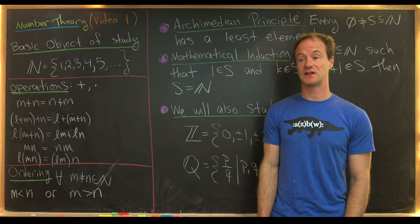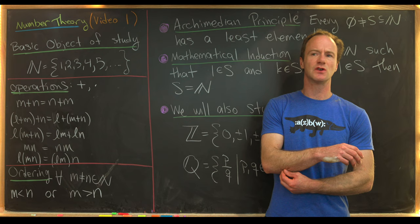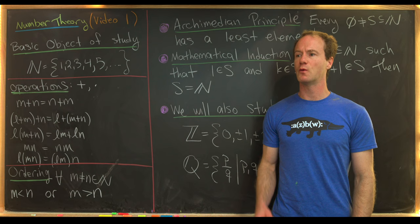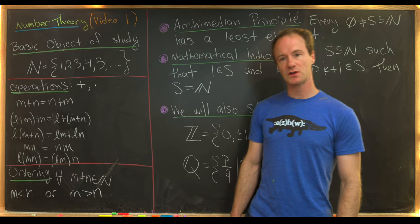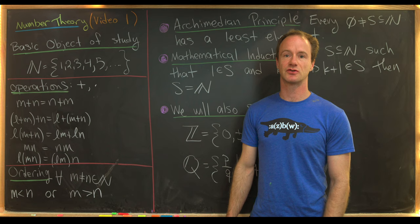I want to start off with our most basic object of study in this course, and that would be the natural numbers. We will not completely construct these natural numbers in a set theoretic way, but we will prove some things involving the Peano axioms a little bit later. By the natural numbers, we mean the positive integers: one, two, three, four, five, and so on. We will not consider zero a natural number in this course.